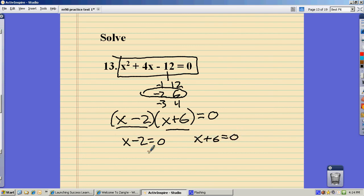And I just solve each of these. Add 2 to both sides, looks like x can be 2. Subtract 6 from both sides, or negative 6. x can be both those things. There's my solution, right there.